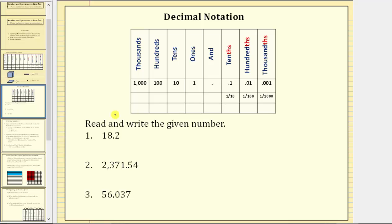In this exercise, we are asked to read and write the number given in decimal notation. For reference, we have a place value chart here, where we have the decimal point in this column, and then to the left we have the ones place value, tens place value, hundreds place value, and thousands place value.